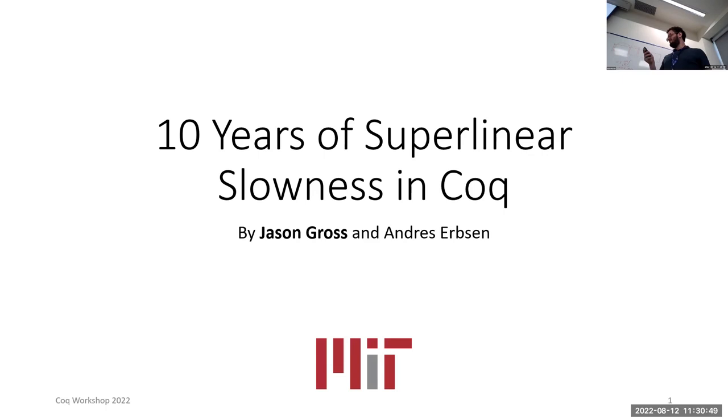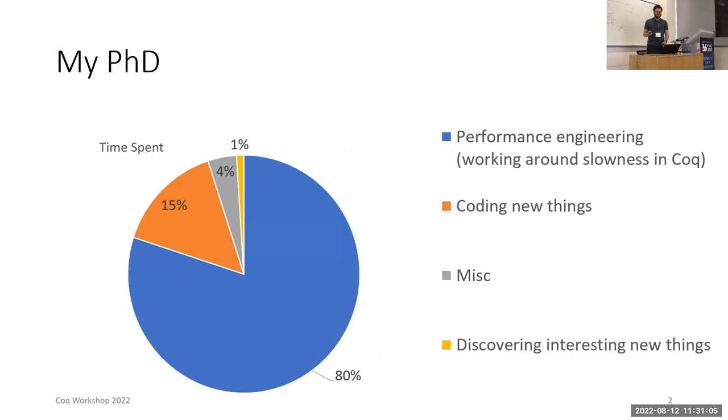I want to share with you our experience of 10 years of superlinear slowness in Coq. I think all of the presentations so far have mentioned performance issues in one way or another, and I hope to give a more coherent picture of them here.